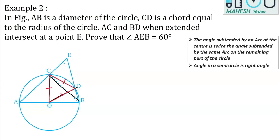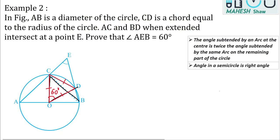Once triangle COD is an equilateral triangle, we can write angle COD as 60 degrees, since each angle of an equilateral triangle is 60 degrees. After that, we use the property that the angle subtended by an arc at the center is twice the angle subtended by it on the remaining part of the circle.